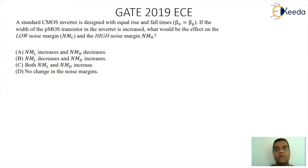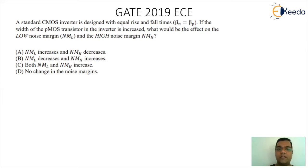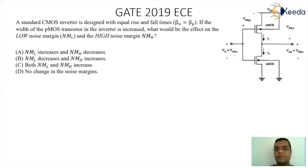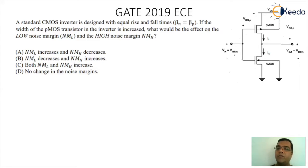If the width of the PMOS transistor in the inverter is increased, what would be the effect on the noise margin low and the noise margin high? For that, we need to check the circuitry first. If you observe carefully, there are two MOSFETs used. The lower circuitry is an NMOS, the upper circuitry is a PMOS, and we are giving an input connected to the gate terminals of both devices.